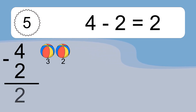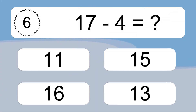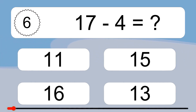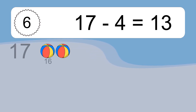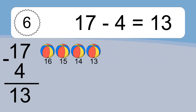4 minus 2 equals what? 4 minus 2 equals 2. Let's count it: 3, 2. 17 minus 4 equals what? 17 minus 4 equals 13. Let's count it: 16, 15, 14.